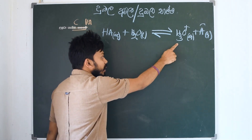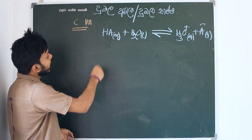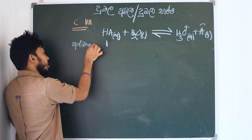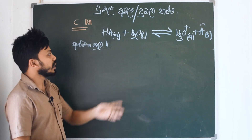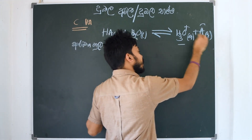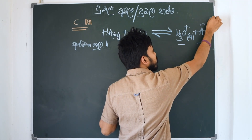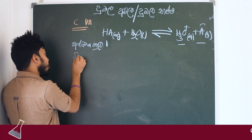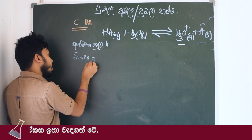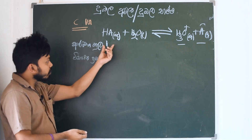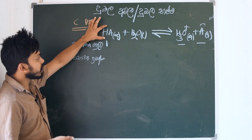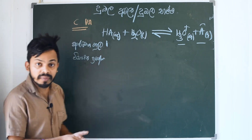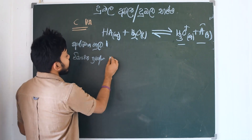Then we consider alpha, the degree of dissociation. Alpha is the fraction of acid that has dissociated. The sentence — the answer — is alpha. Alpha represents the degree of dissociation.